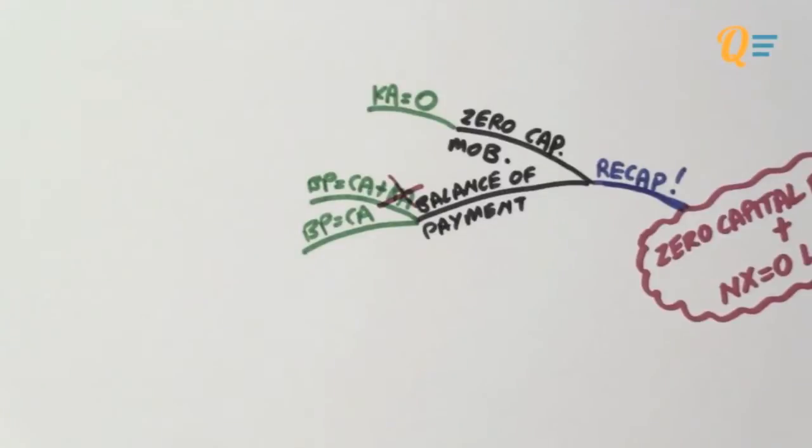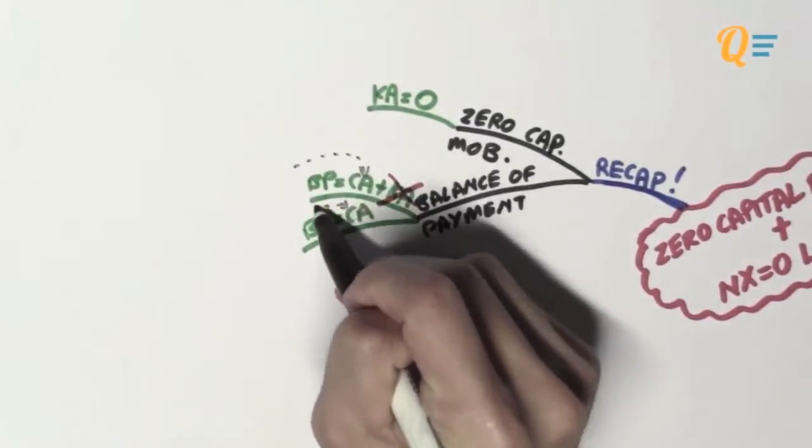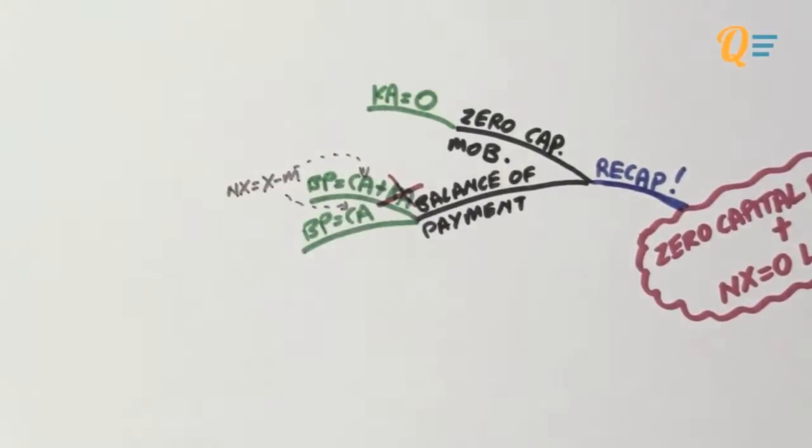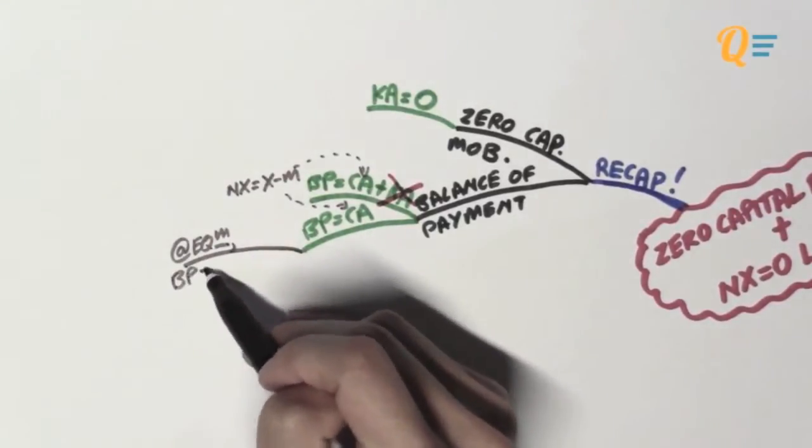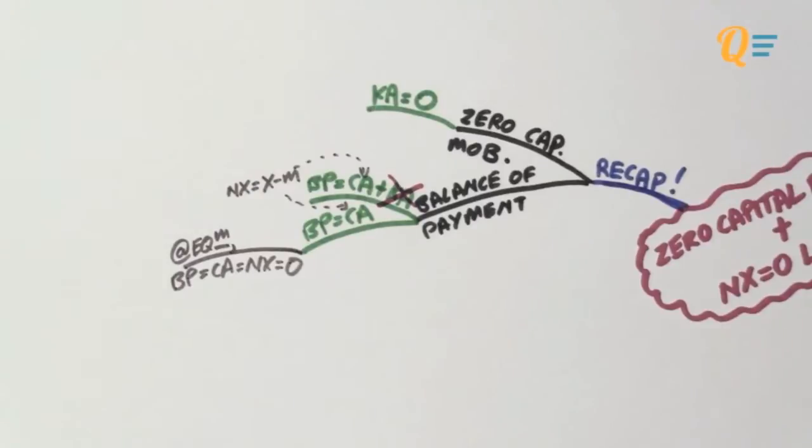So in the previous video, we discussed that the current account is made up of net transfers, investment income as well as net exports which is actually the key focus in introduction to economics. So at equilibrium, what you need to know is that the balance of payment which is the current account which is also the net exports should be equals to zero.